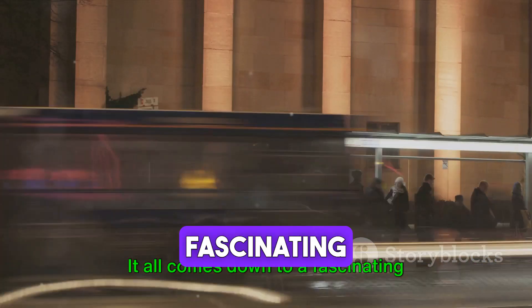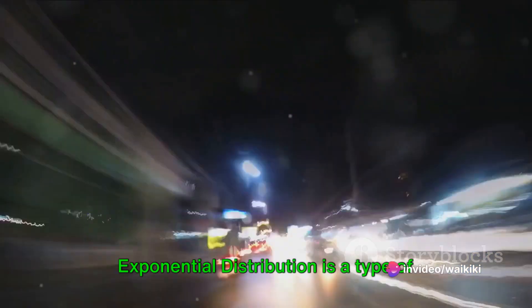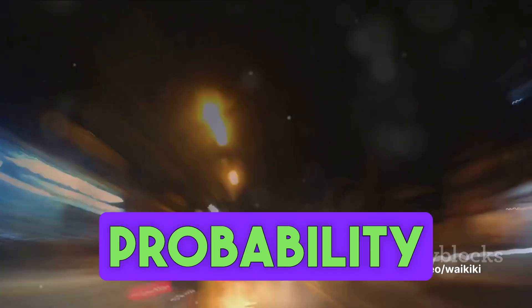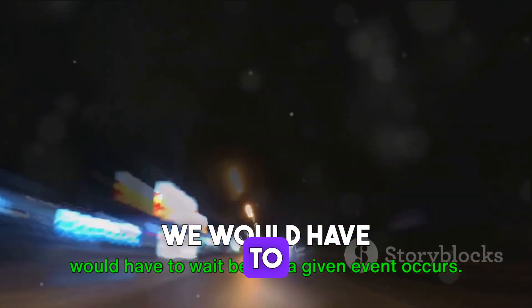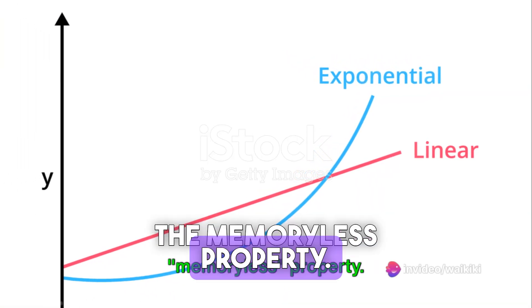It all comes down to a fascinating mathematical concept known as the exponential distribution. Exponential distribution is a type of continuous probability distribution that is commonly used to model the time we would have to wait before a given event occurs. One of its unique features is the memoryless property.